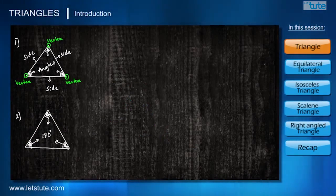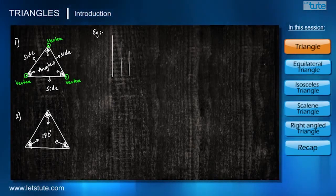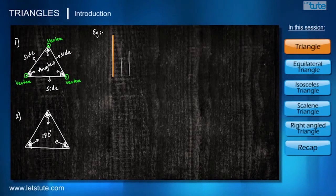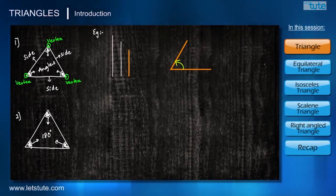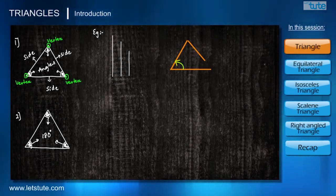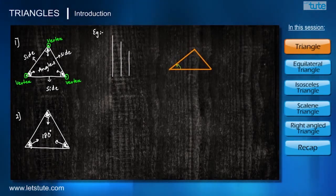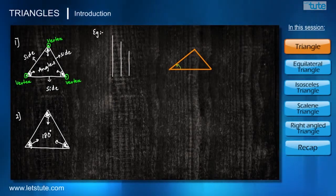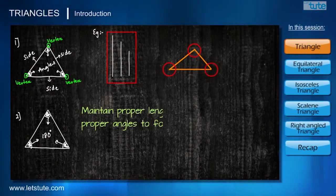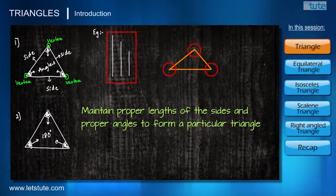For better understanding of this property, consider this example. I'll take three randomly sized line segments and try to form a triangle. Starting with the first line, then the second line at some angle — but now I'm falling short of length with the third line. To complete the triangle, I either have to increase the length of the third side or decrease the angle made by the first and second sides. So we can't make just any triangle with three lines at any angles; we must maintain proper lengths and proper angles.